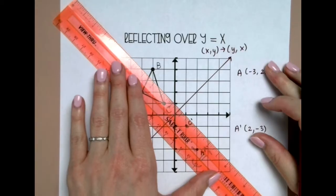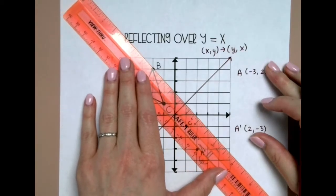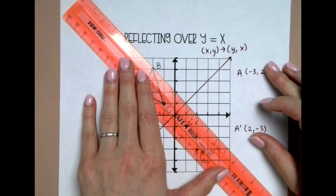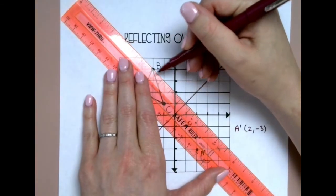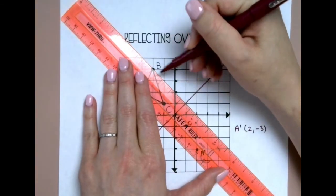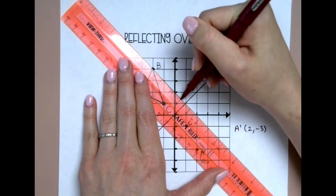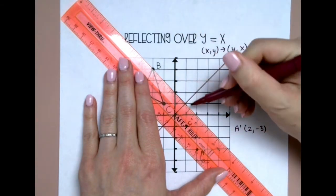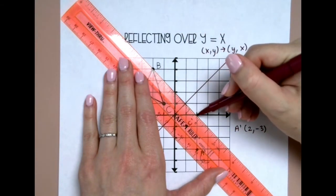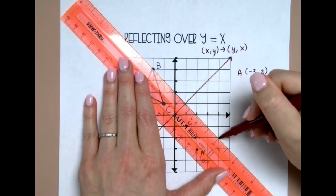I'm going to do the same thing with B. Make sure you line it up - you want it to be perpendicular. I just want to count from corner to corner, so B is one, two, three away. So I want to go one, two, three.